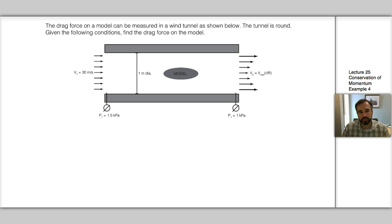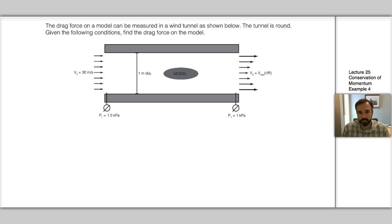At the downstream end, the velocity is linearly varying with the distance from the center line out to the edge of the wind tunnel, given as V2 equals Vmax times lowercase r divided by the radius R of the wind tunnel. We're also given that the upstream pressure is 1.5 kilopascals and the downstream pressure is 1 kilopascal.